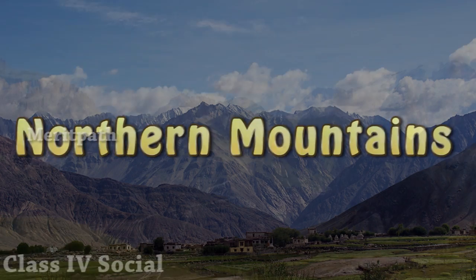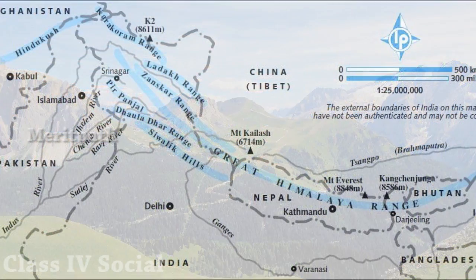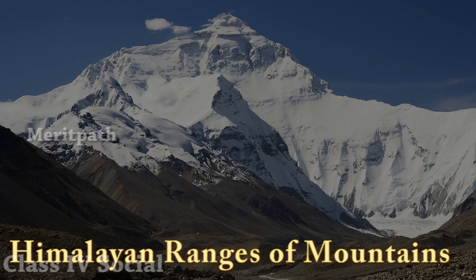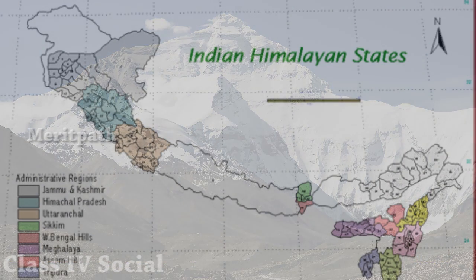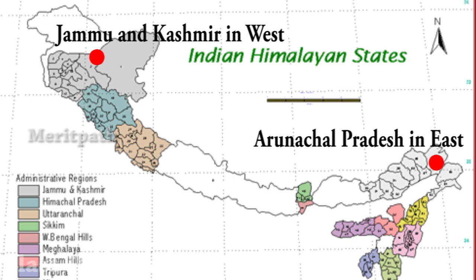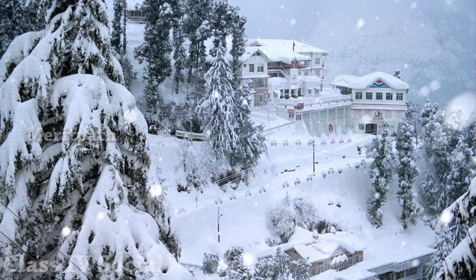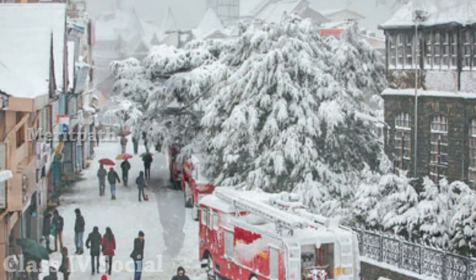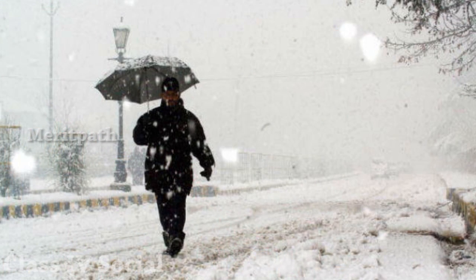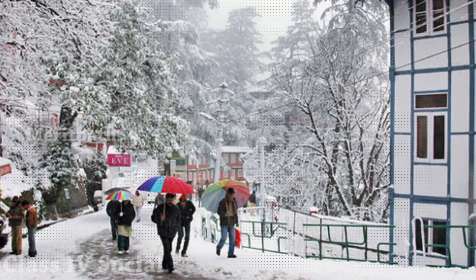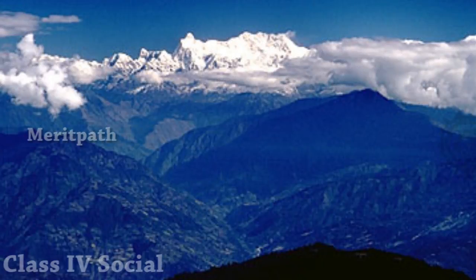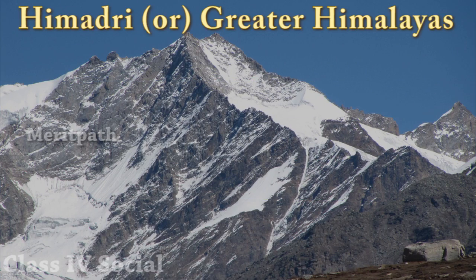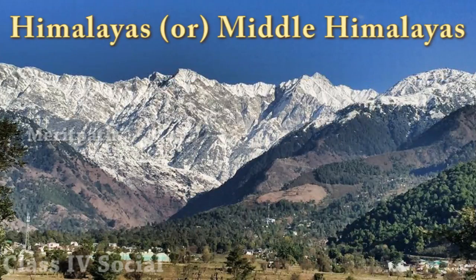Northern Mountains. There are long ranges of mountains in the north of India. They include the Karakoram, Ladakh, and the Himalayan range of mountains. The Himalayas stretch from Kashmir in the west to Arunachal Pradesh in the east. A large part of the Himalayan range is covered with snow throughout the year. Because of this, the climate in this region is very cold and so the population is not very high. The Himalayan ranges run parallel to one another. The three Himalayan ranges are the Himadri, which is the greater Himalayas, the Himachal or the middle Himalayas, and the Shivalik, which is the outer Himalayas.